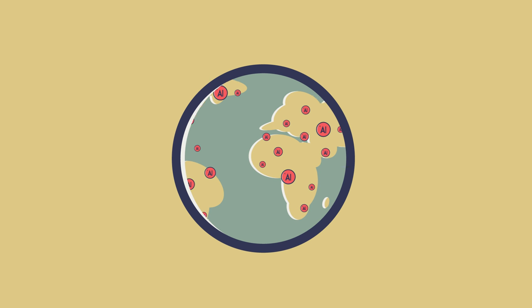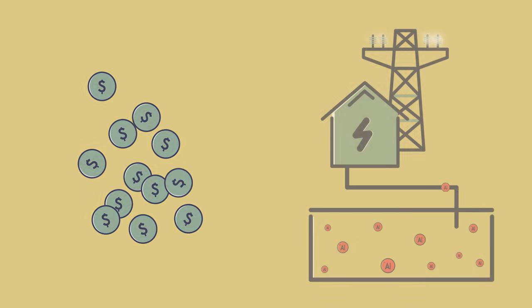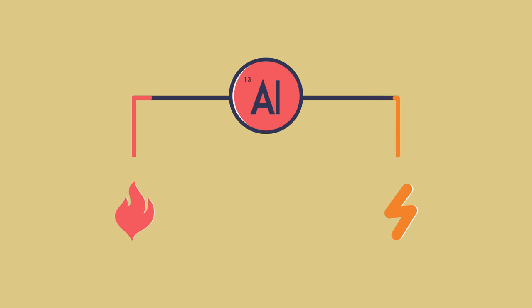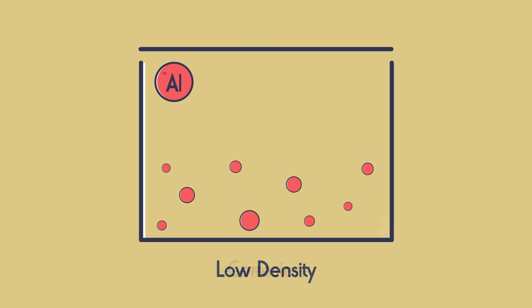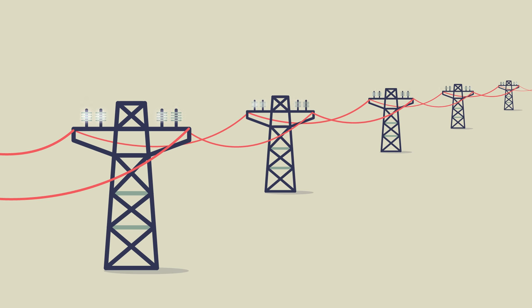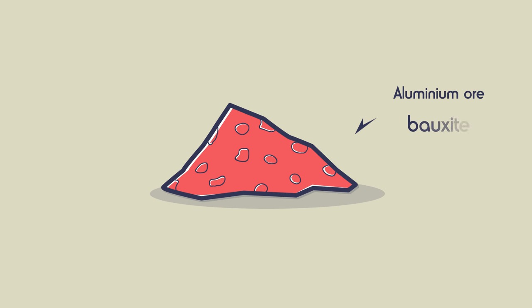Aluminium is the most abundant metal on earth, however it is expensive because a lot of electricity is used to extract it. Aluminium conducts heat and electricity well, has a low density and does not corrode. This makes it very useful for aeroplanes, drinks cans, electricity cables and cooking pans. The aluminium ore is called bauxite.